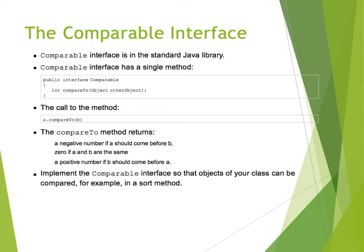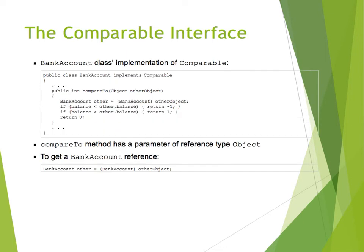You implement the Comparable interface so that objects of your class can be compared and sorted. Here is an example of implementing Comparable in a BankAccount class. At the beginning you write 'BankAccount implements Comparable', and then you provide an implementation for the compareTo method. The compareTo method has an explicit parameter called otherObject with type Object.